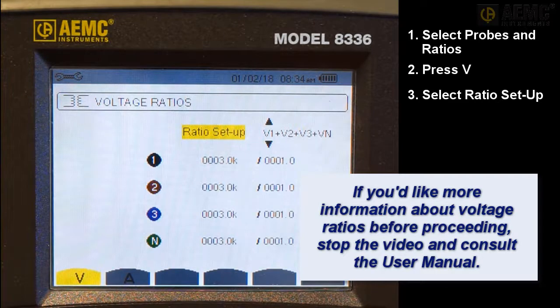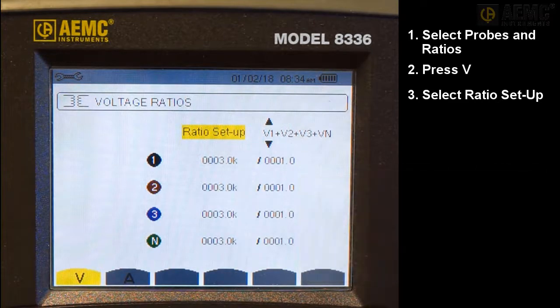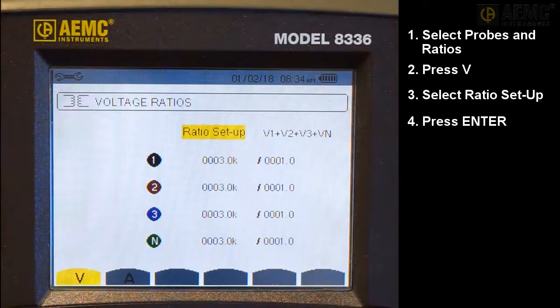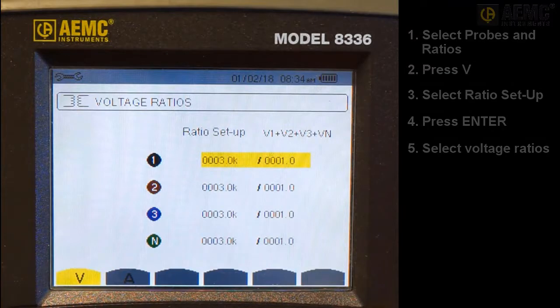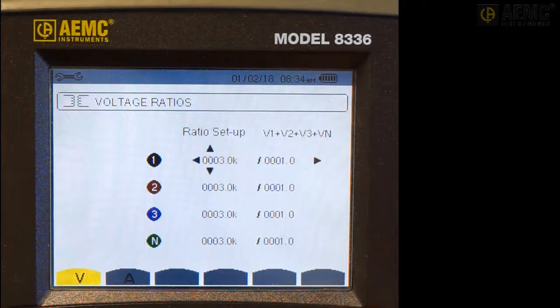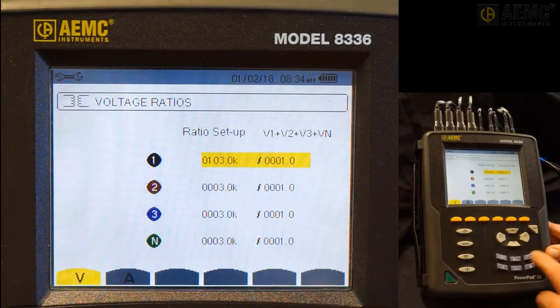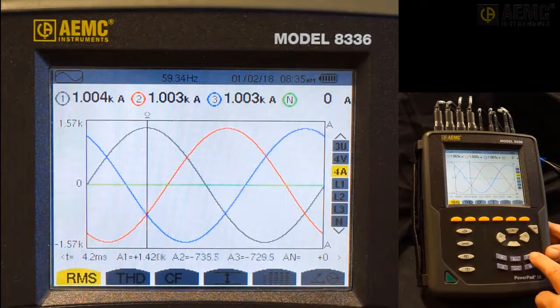In our demonstration, we will choose to have different ratios for every line. Press Enter to save the selection. Press the up and down arrows to navigate through the list of voltage ratios, and press Enter to edit a setting. Feel free to spend a few moments experimenting with the voltage ratios and observing how the measurement reacts. For example, set a voltage ratio, then press the waveform measurement button and observe the change to the displayed data.